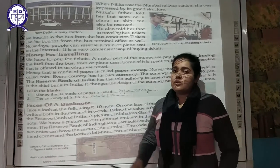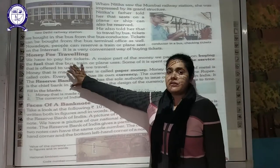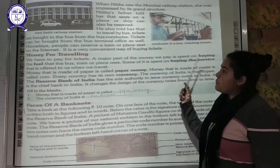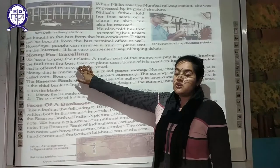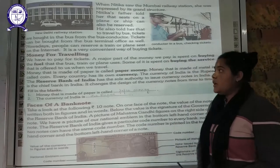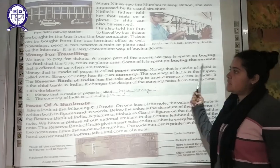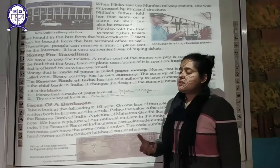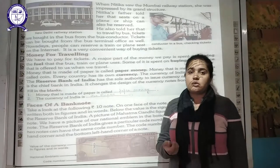Regarding money for travelling — we have to pay for tickets, and the major portion of the money paid by any traveller for that journey is spent on buying fuel for the bus, train, or plane being used. Various other amounts of money are spent on the services offered when you are travelling. The money made of paper is known as paper money, and the money made of metal is called coins.